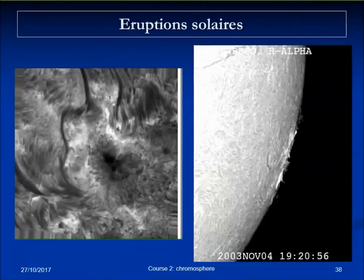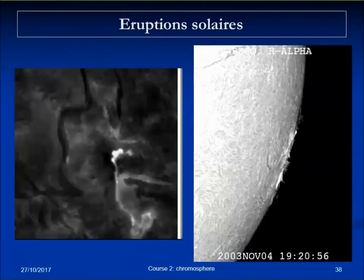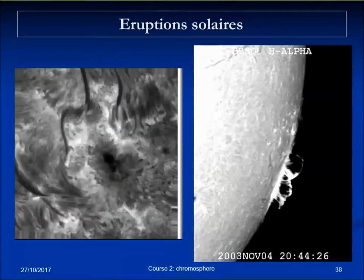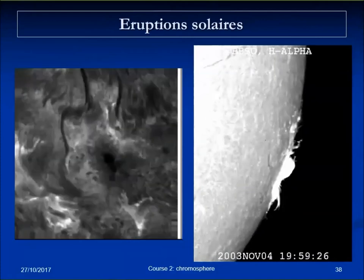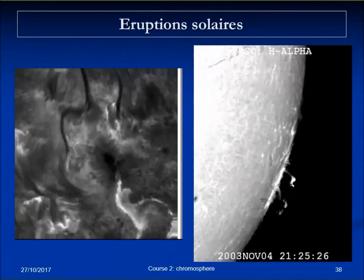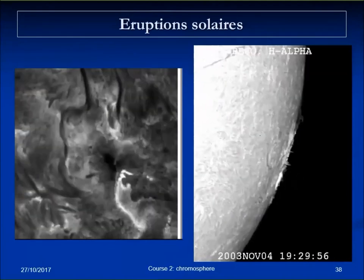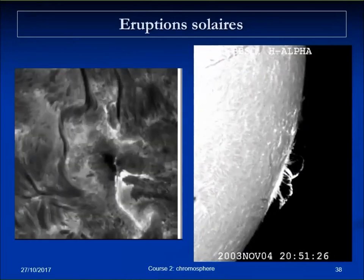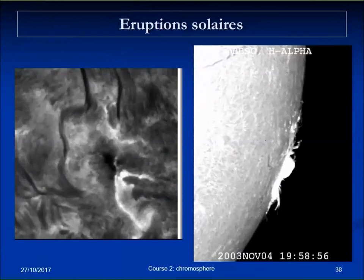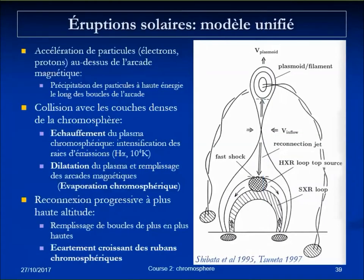In other movies, a propagating motion along lines indicates that something is following the footpoints of magnetic structures. At the limb, the ribbons are really just at the surface. All you can see are the post-flare loops that expand in the decaying phase of the flare.